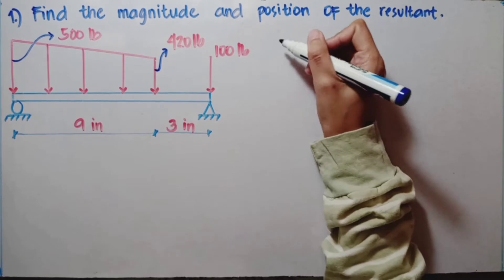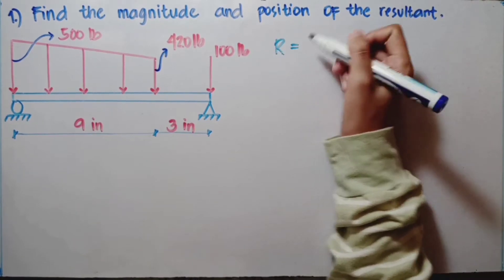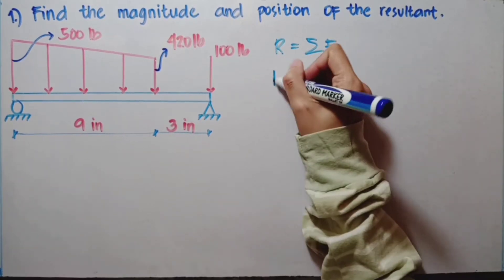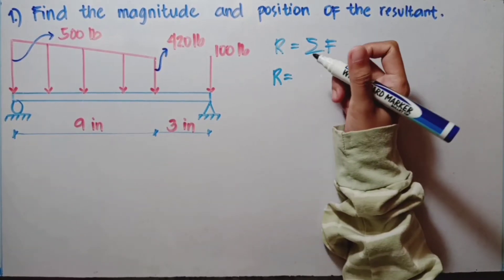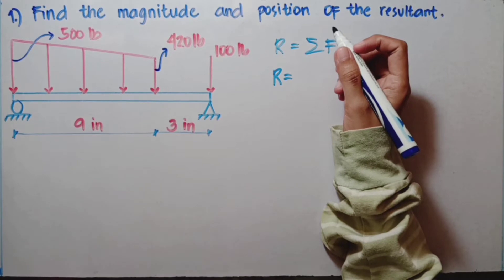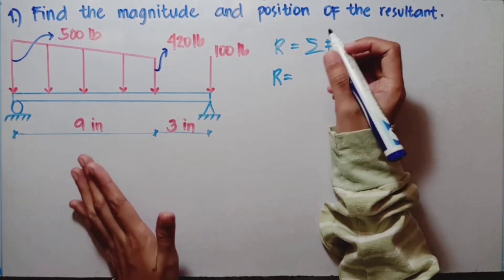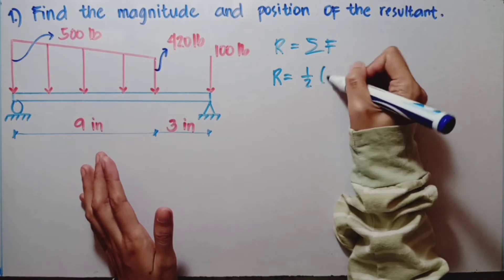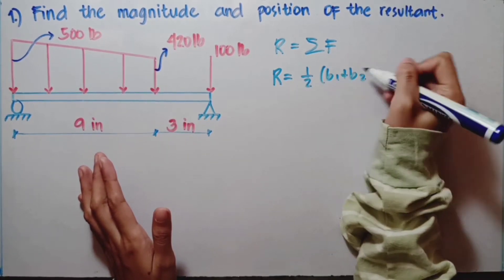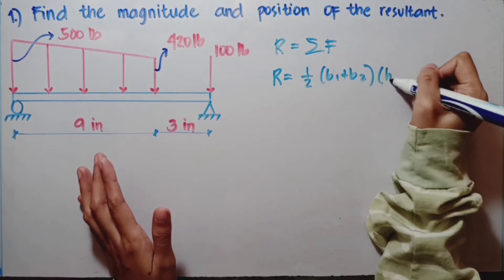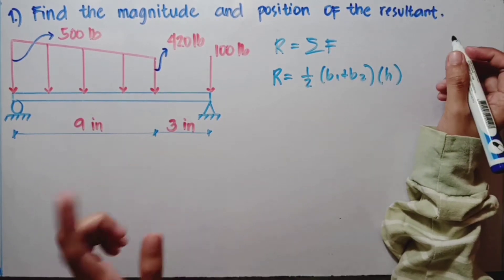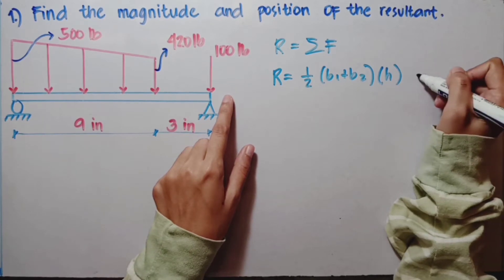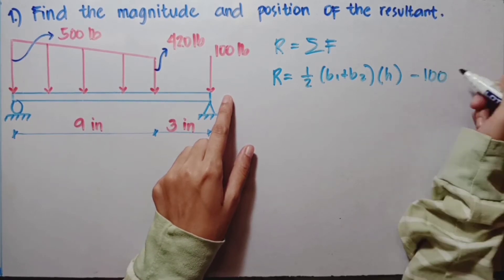The first thing we will do is get the resultant using the formula of summation of forces. For R, we will use the area of the trapezoid — the formula of the area of the trapezoid which is one-half (base 1 plus base 2) times the height, and then minus 100 because the force of 100 pounds is going downward.